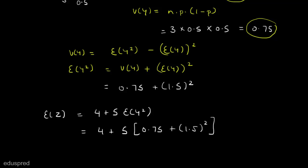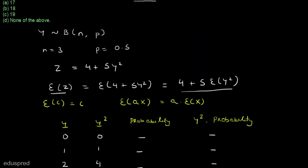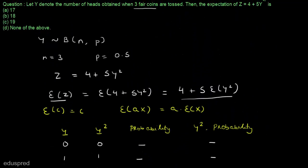Solving this, we get that the expected value of Z equals 4 plus 5 times (0.75 plus 1.5 squared), which equals 19. So the expected value of Z is equal to 19, meaning the right answer is option C.